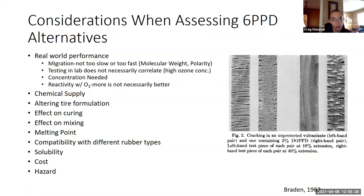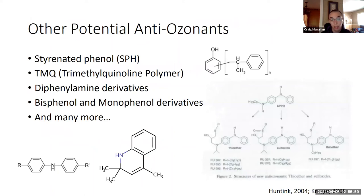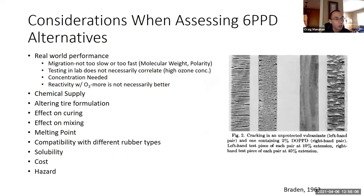Cost of the anti-ozonant is another consideration — they're used at a small percentage, but raising cost can definitely be a factor. And last but definitely not least is hazard. We have all these different alternatives cited in literature, but are they really any safer than 6-PPD? That's something we really don't know right now. For example, bisphenols, monophenols, and styrenated phenols are not safe compounds — we can't just switch to something else, even if it works, without fully testing its hazard.